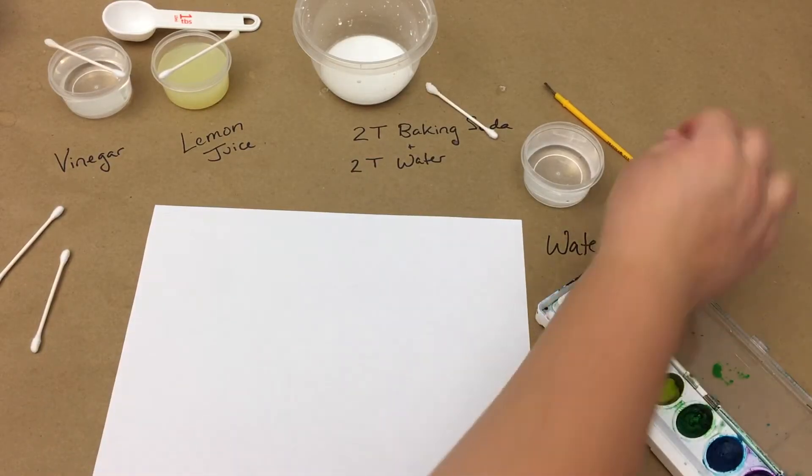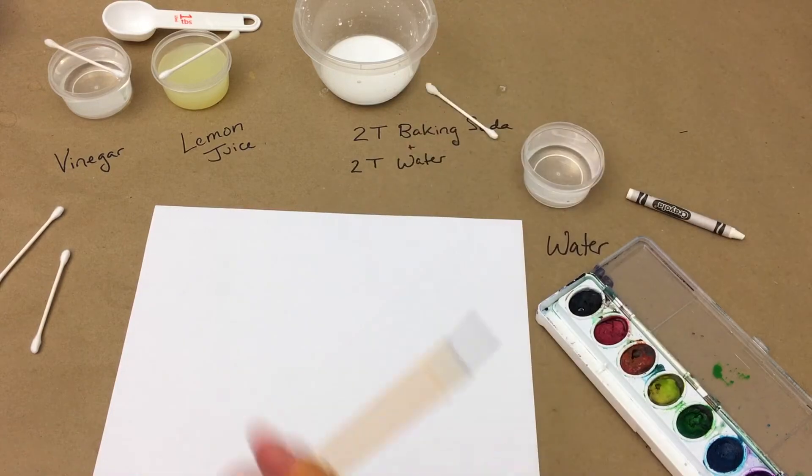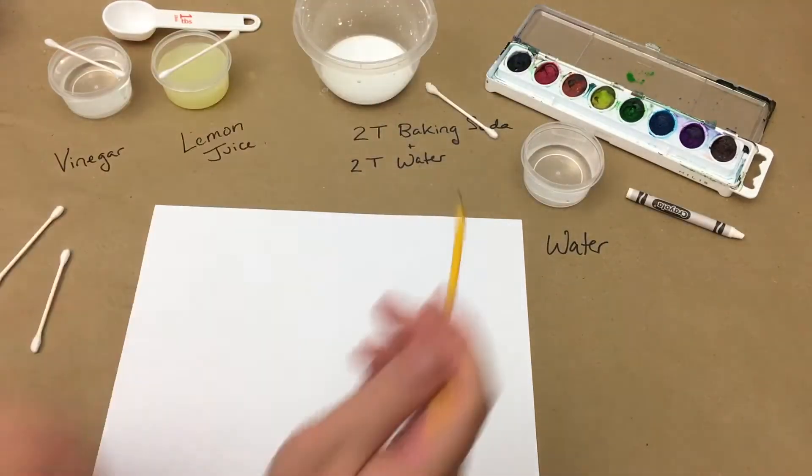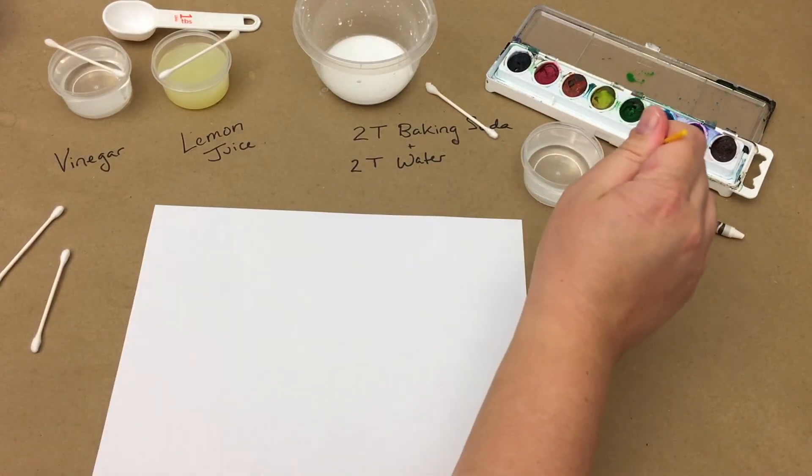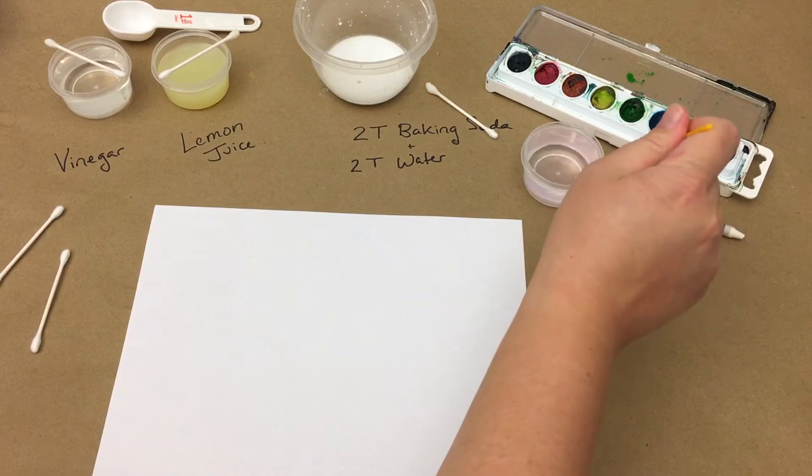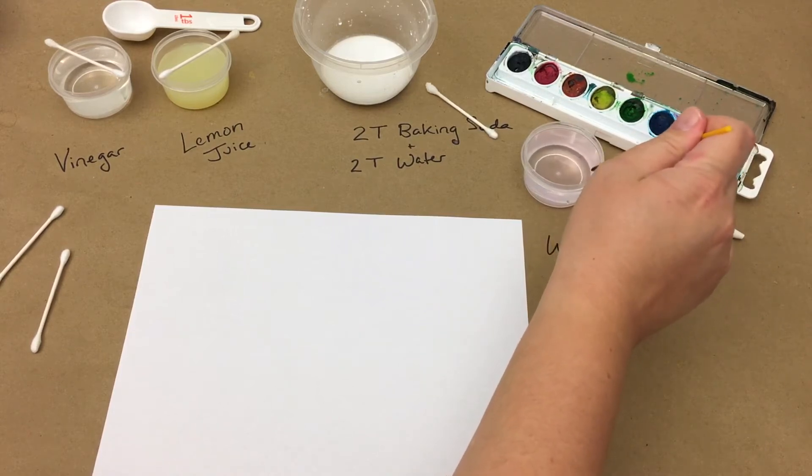To reveal your message written in white crayon, you will need a paintbrush, a set of watercolor paints, and access to a dish of water. Go ahead and wet your brush and choose a darker paint color. The darker colors typically help reveal better, but you can try different colors and see what works for you.